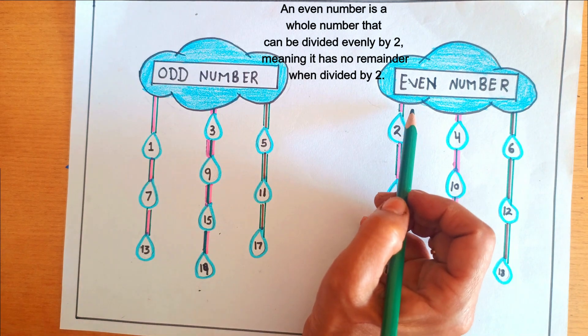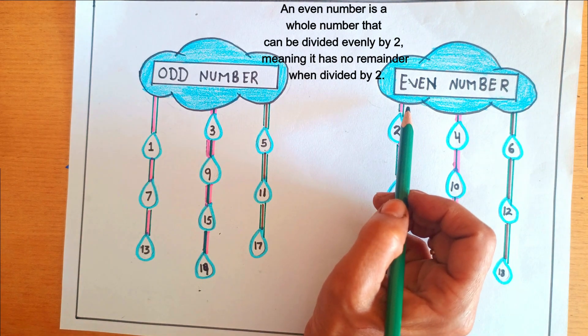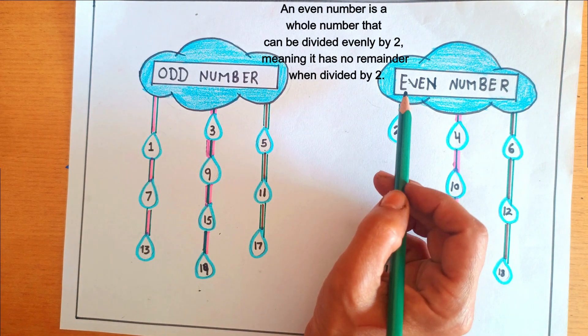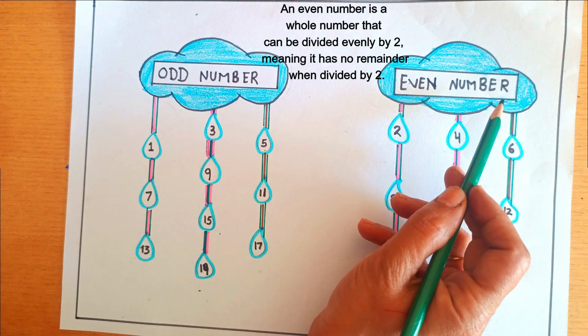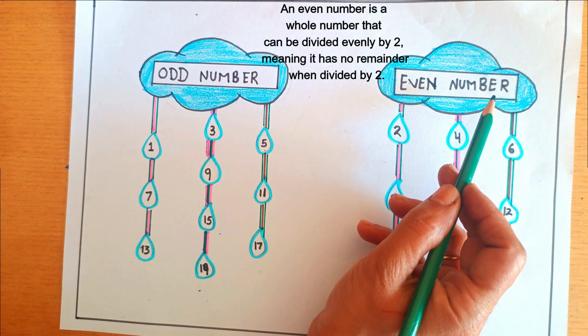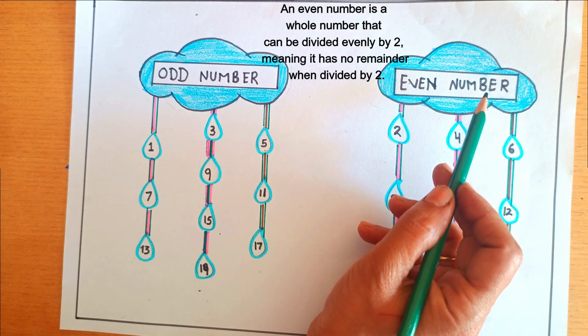An even number is a whole number that can be divided evenly by 2, meaning it has no remainder when it is divided by 2.